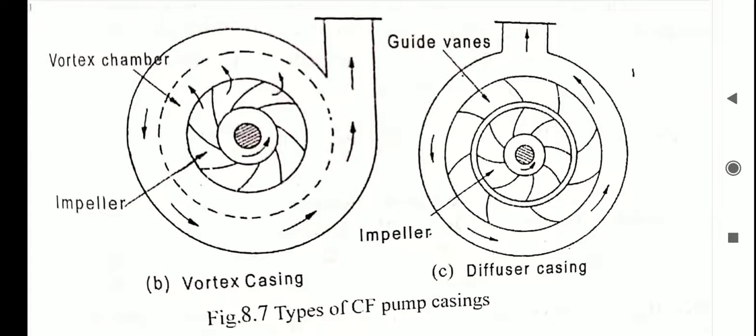In this type of casing, the impeller is surrounded by a series of guide blades mounted on a ring, which is known as a diffuser. As you can see from this figure, this is a diffuser casing.